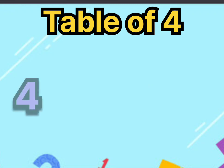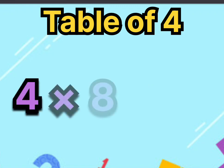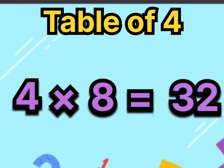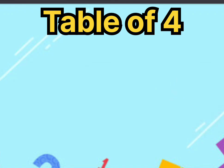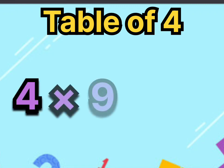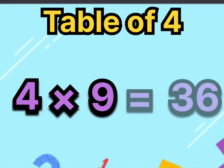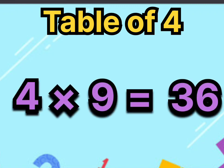Four eights are thirty-two. Say it again, four eights are thirty-two. Four nines are thirty-six. Say it again, four nines are thirty-six.